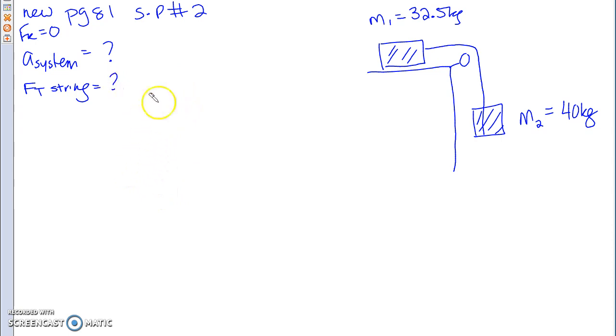We're going to do this question using or starting with our FBDs. You've got FG2 downward. Tension pulling me upward. Now this is one string, so my tension is going to be conserved all the way through. Here, I've got FN, I've got FG, and I've got FT. Do I have a FK going backward? No, because this is a frictionless pulley. My FK equals to zero. So far, so good?